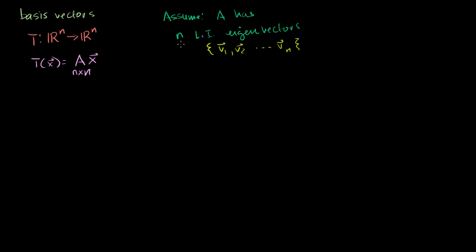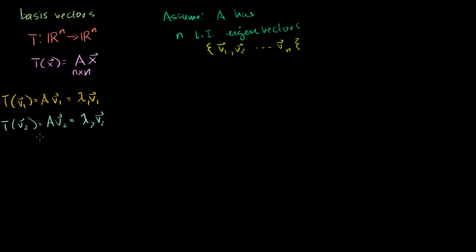The transformation of each of these vectors — I'm going to write it over here. The transformation of V1 is equal to A times V1, and since V1 is an eigenvector of A, that's going to be equal to some eigenvalue lambda 1 times V1. We could do that for all of them: the transformation of V2 is equal to A times V2, which equals lambda 2 times V2. Skipping to the nth one: the transformation of Vn is equal to A times Vn, which is just lambda n times Vn.